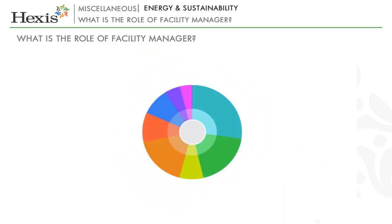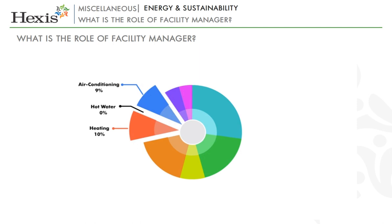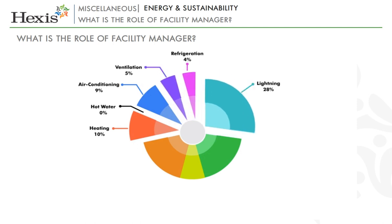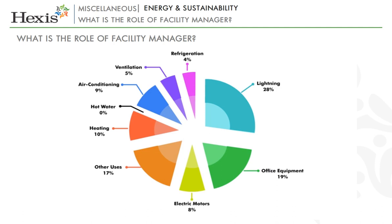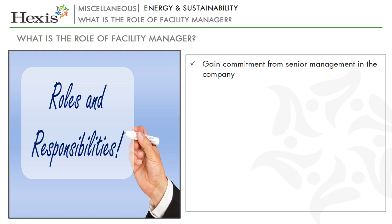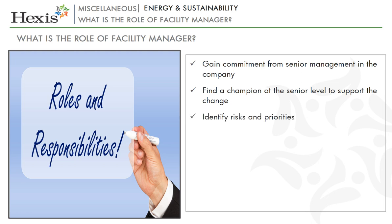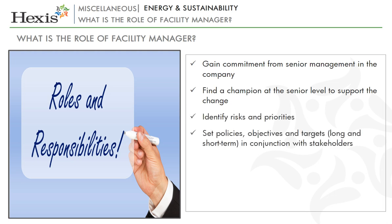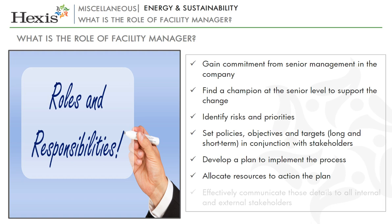As the graph illustrates, the energy used for space and water heating, air conditioning, cooling, and lighting a commercial building is significant, and it is by focusing on these areas that the largest savings can be made. The role of the facility manager includes: gaining commitment from senior management; finding a champion at the senior level to support change; identifying risks and priorities; setting policies, objectives and targets (long and short term) with stakeholders; developing a plan to implement the process; allocating resources; and effectively communicating details to all internal and external stakeholders.